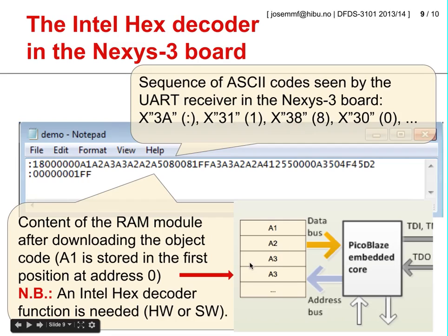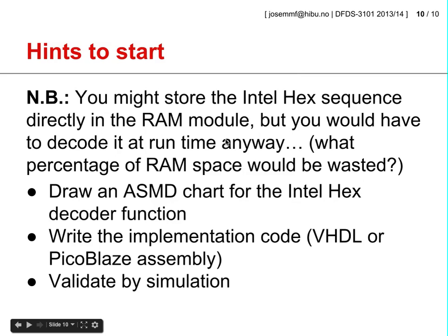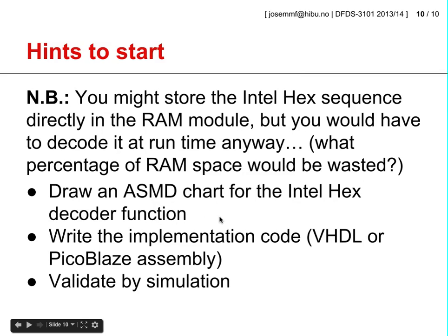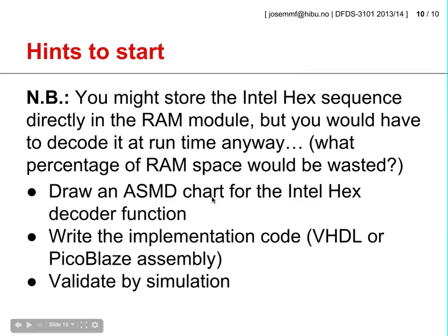This means you must design an Intel Hex decoder function, and it can be designed in hardware or in software. You could store the Intel Hex sequence directly in the RAM module, but you would have to decode it at runtime anyway, and you would be wasting RAM space. What is recommended is to start by drawing an ASMD chart for the Intel Hex decoder function. If you implement it in hardware, use the ASMD chart to write the VHDL code. If you prefer software, use the ASMD chart as a flowchart guiding the implementation in PicoBlaze assembly.